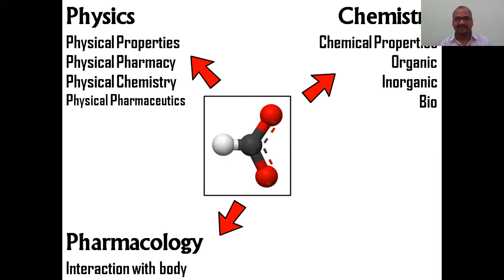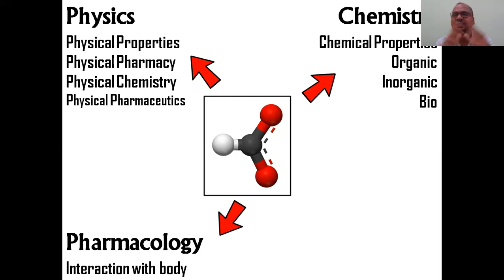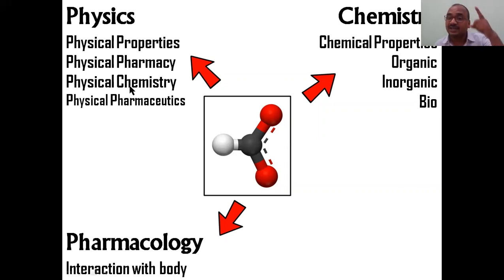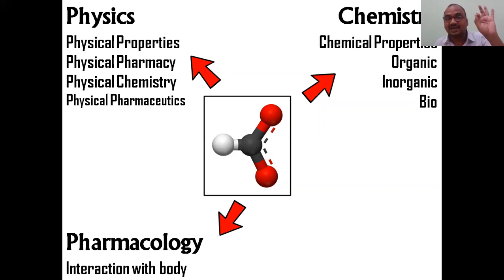The three properties of a drug molecule are: first, physical properties — the name indicates structure, molecular weight, density, surface tension, interfacial tension — all due to the physical existence of the molecule. These are studied in the subject of physics, which is why we call it Physical Pharmacy, also called Physical Chemistry. BSc students call it Physical Chemistry, and we also call it Physical Pharmaceutics.